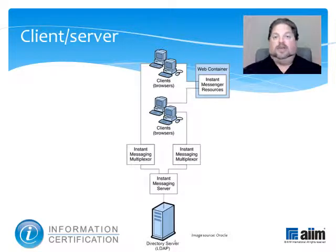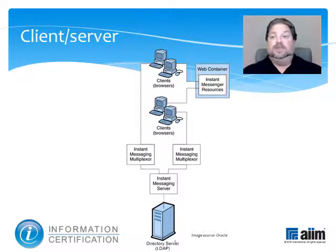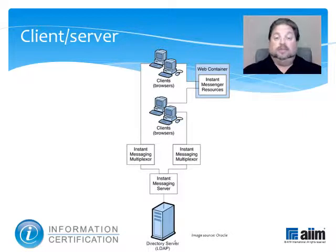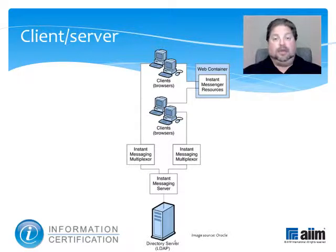On a client-server network, every computer is either a client or a server. A server shares its resources among the client computers on the network, and is usually located in a secured area such as a locked closet or a data center, because of the value of the information it typically contains. The other computer on the network is a client. Primary advantages of this kind of architecture revolve around the ability of administrators to centrally manage and secure the servers.